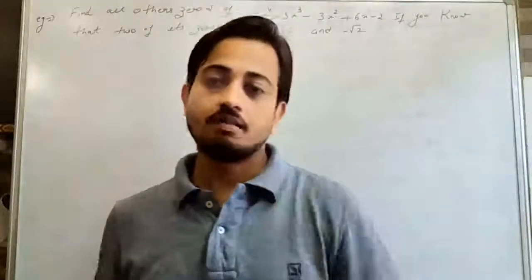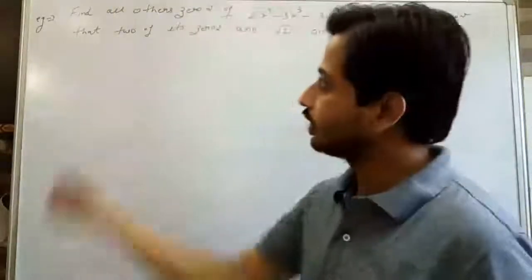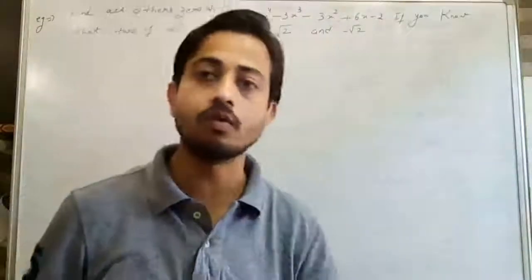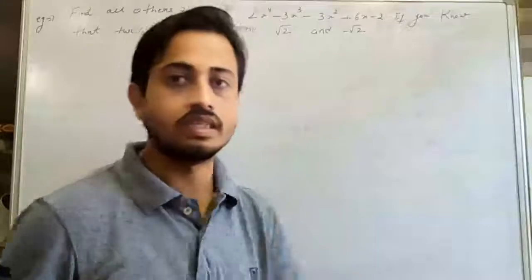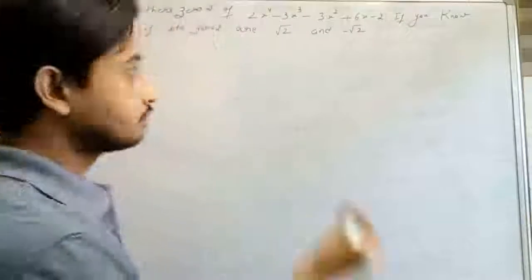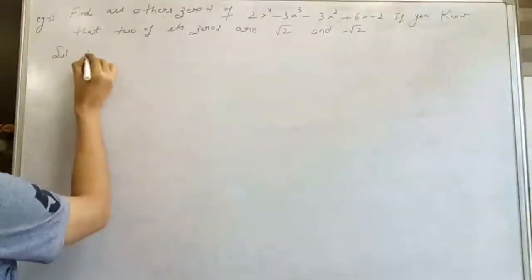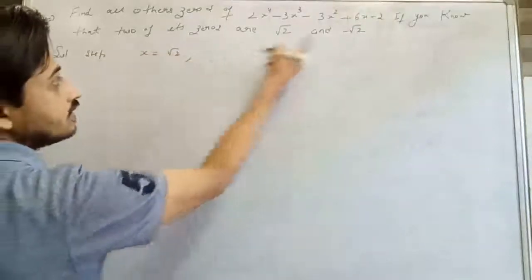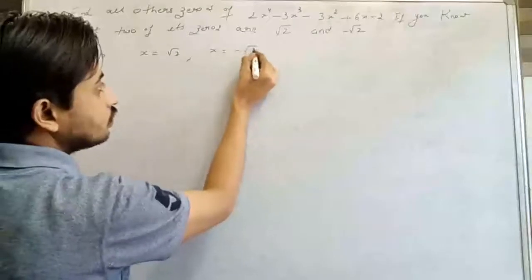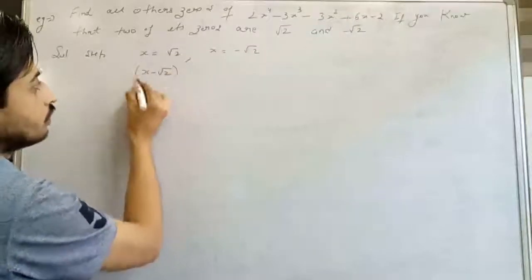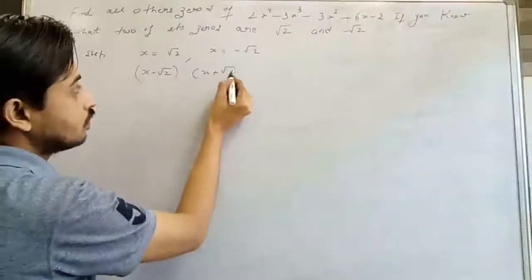Now I am going to take another example similar to question 3. The polynomial is 2x⁴ − x³ − 3x² + 6x − 2, which has degree 4 and therefore 4 zeros. Two zeros are already given: x = √2 and x = −√2. Step 1: The corresponding factors are (x − √2) and (x + √2). Step 2: Multiply them using (A − B)(A + B) = A² − B² to get x² − 2. So x² − 2 is also a factor of the polynomial.